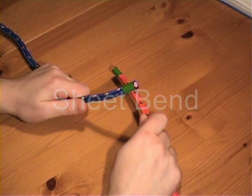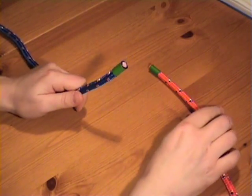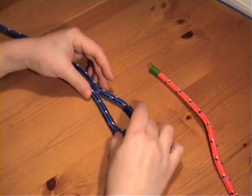The sheet bend. This knot is the most commonly used knot to join two pieces of rope. Take the working part of the first rope and form a loop.